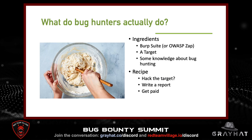Let's talk about what bug hunters actually do. The recipe: you need Burp, ZAP, or OWASP tools; something to hack; and some knowledge about bug hunting. The steps are: hack the target, write the report, and get paid — though the get-paid part varies, since some programs award swag or are vulnerability disclosure only with no bounty.